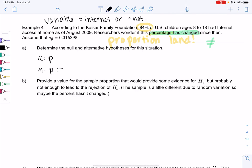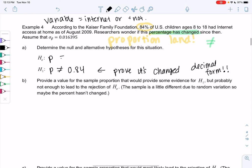So we just want to prove it's not equal to 0.84. That's how we would prove it's changed. And we'll always change those proportions to decimal form. So 0.84 instead of 84%. And so then my null is just equals 0.84. And we'll do the same thing as last example.